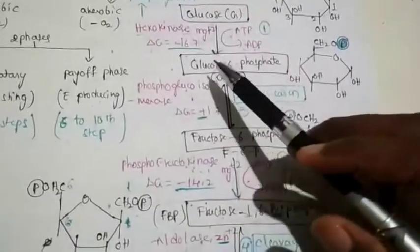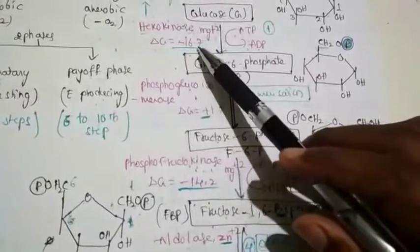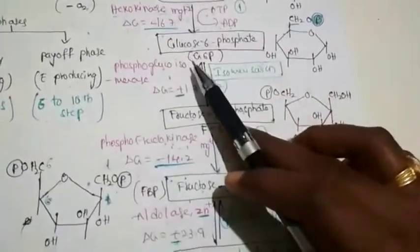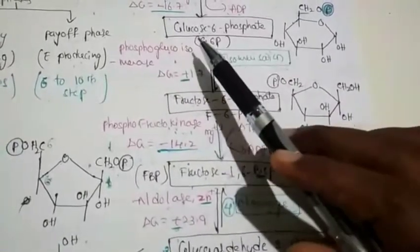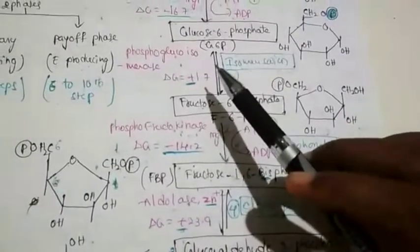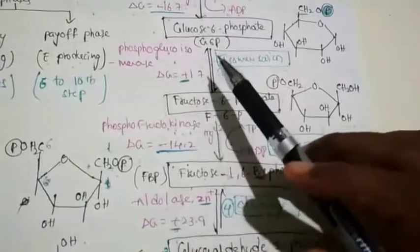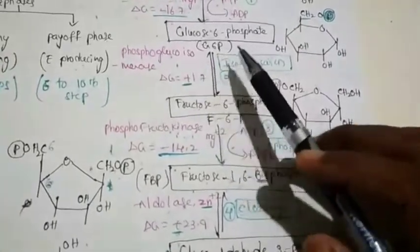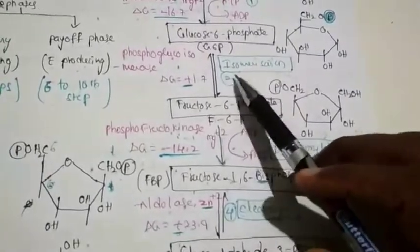This step is an exergonic process because the free energy released has a negative value, so it is an exothermic reaction. The second step is the conversion of glucose-6-phosphate into fructose-6-phosphate. Glucose and fructose are both isomers of each other, so this process is called isomerization.